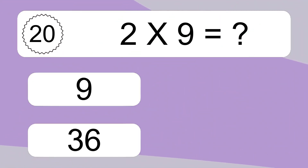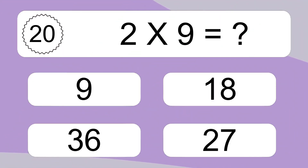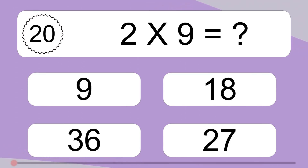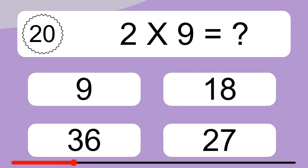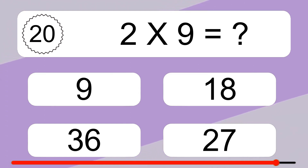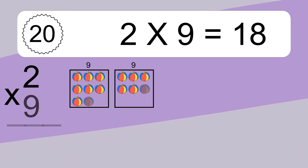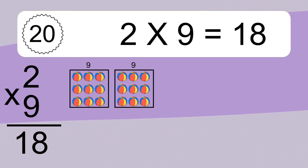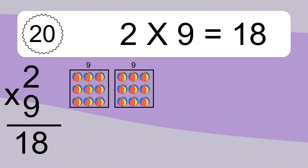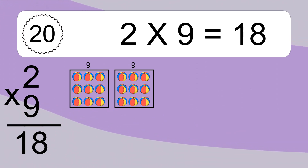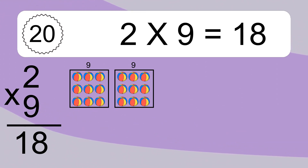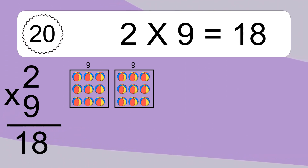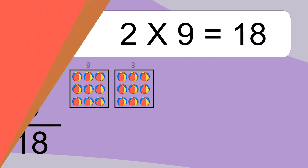2 times 9 equals what? 2 times 9 equals 18. We have 2 boxes, and each box has 9 colorful balls inside. If you count all the balls in all the boxes together, you will have 2 times 9 balls. This equals 18 balls.